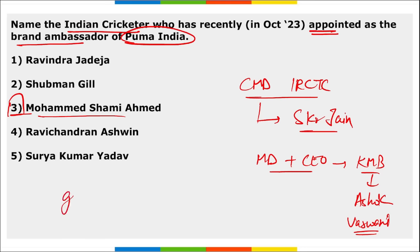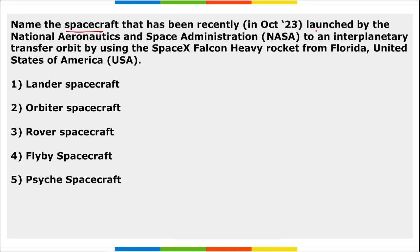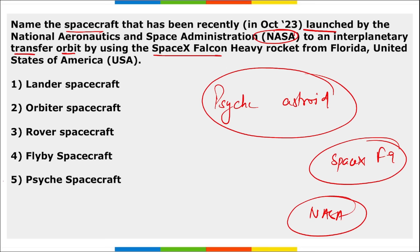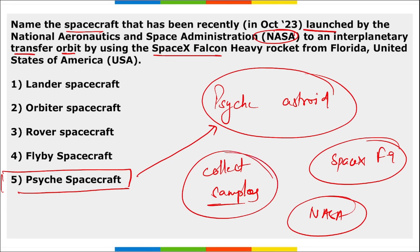In the Cambrian Patrol 2023 military exercise, the Indian Army won the gold medal. NASA launched the Psyche spacecraft to an interplanetary transfer orbit using SpaceX Falcon 9 rocket from Florida, USA. It was launched toward the Psyche Asteroid — to collect samples from this asteroid, which orbits the sun between Mars and Jupiter.